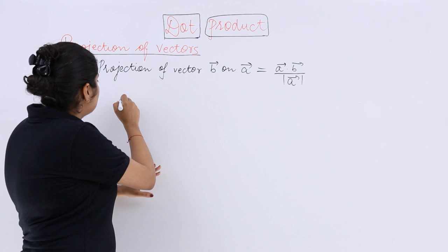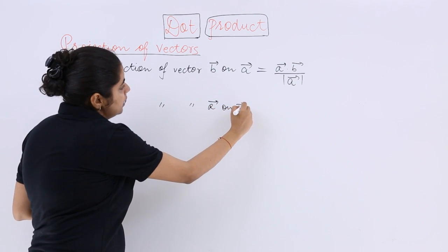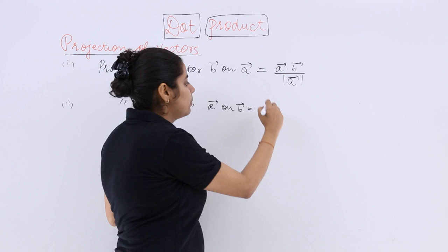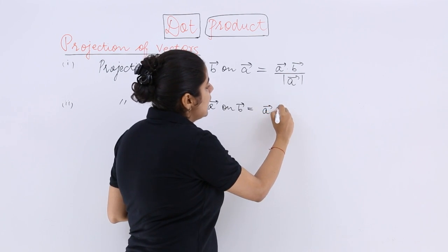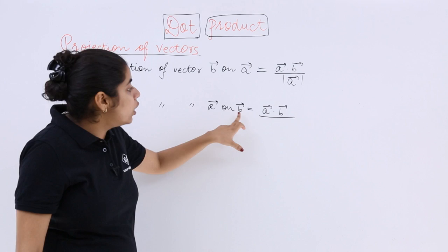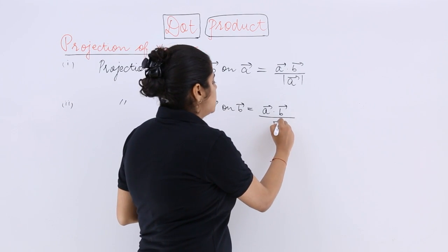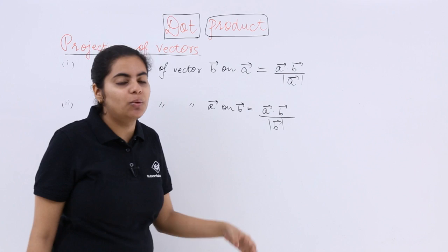Now similarly, if I write projection of vector A on B, my question is the numerator will be dot product only. Now you tell me by the previous trick what is the denominator, on which vector have you put the projection, B vector? So it is magnitude of B or modulus of B.